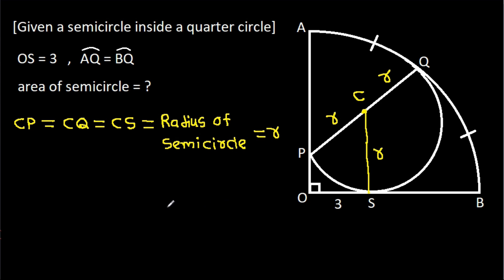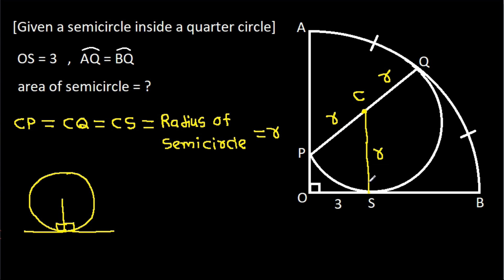We know that in any circle, the radius and tangent are perpendicular to each other. So these angles will be 90 degrees.